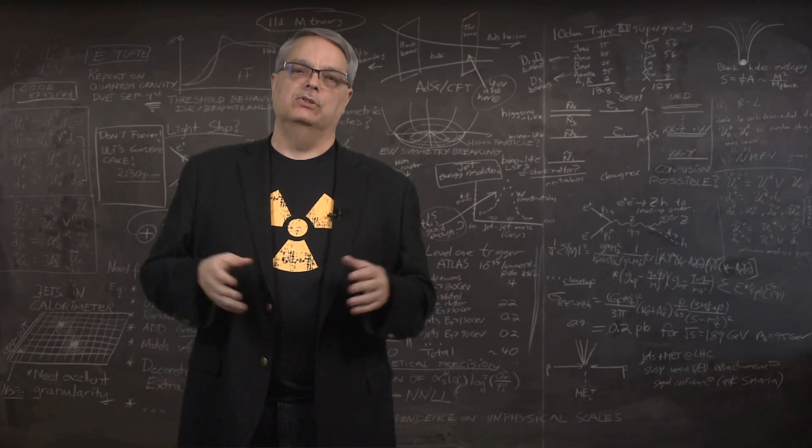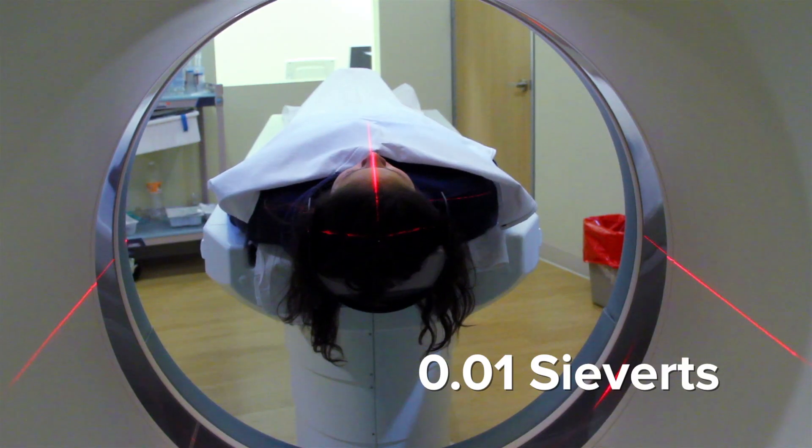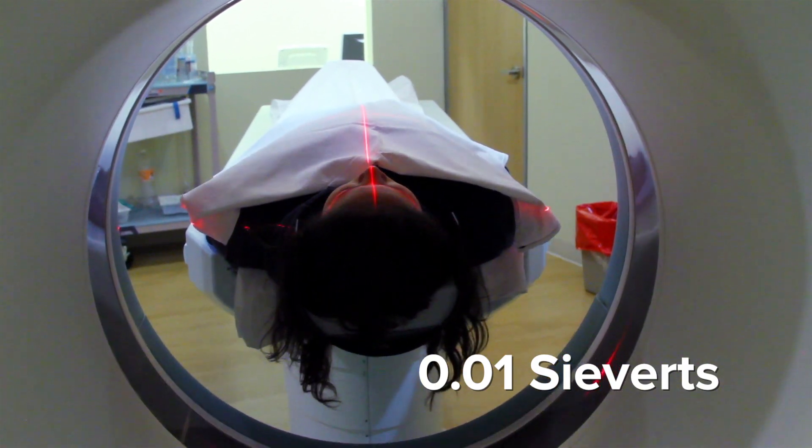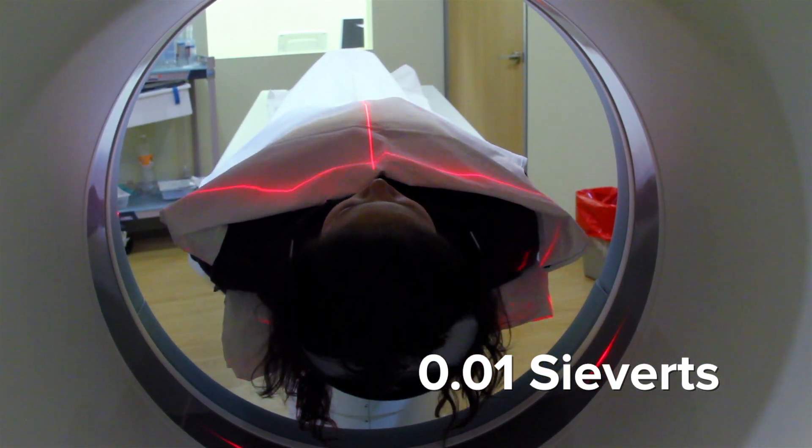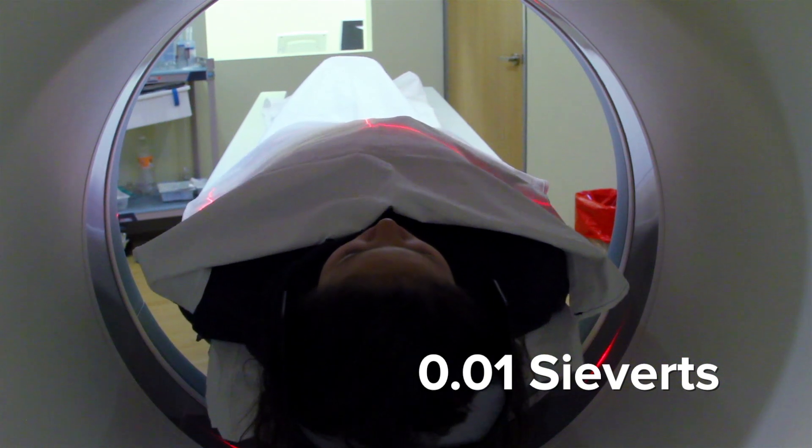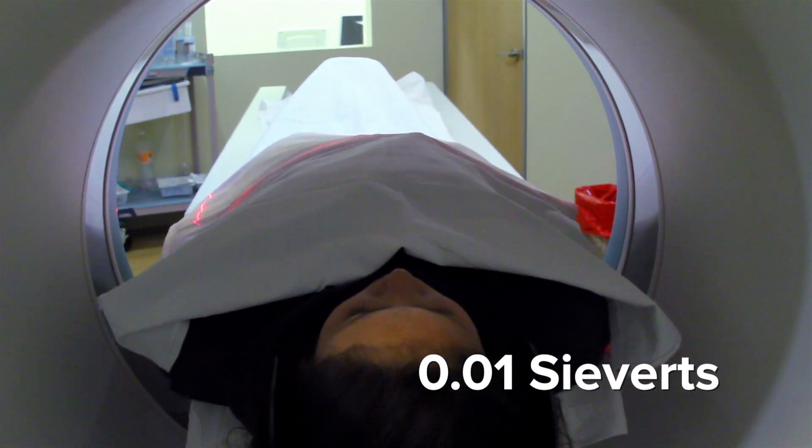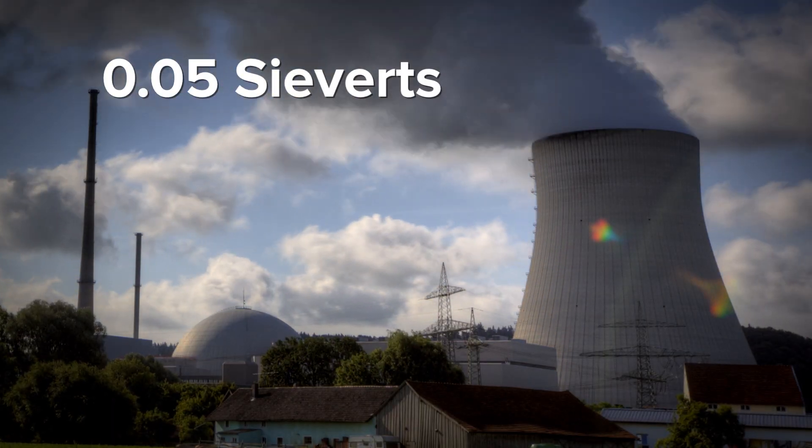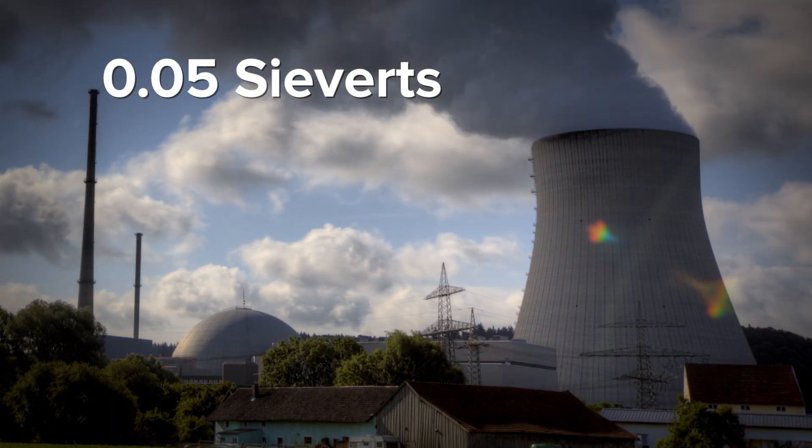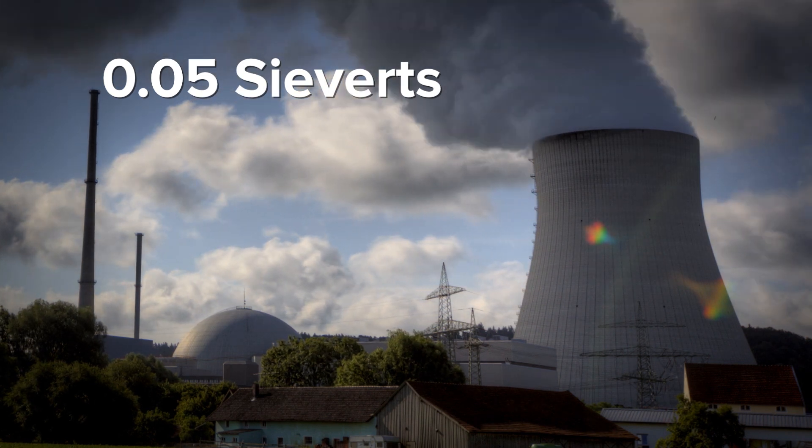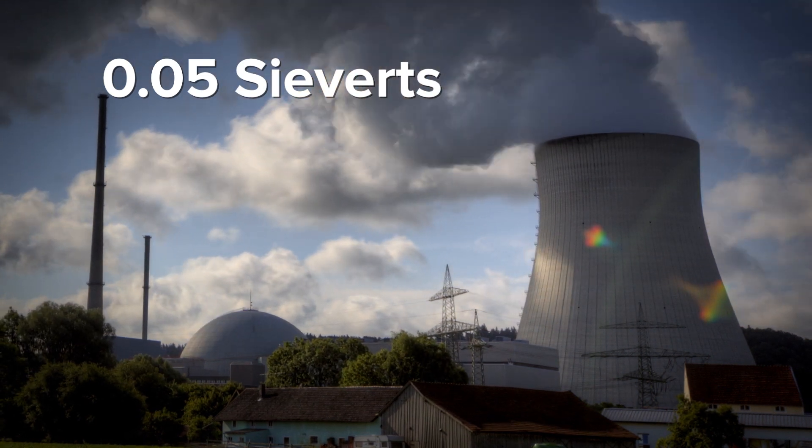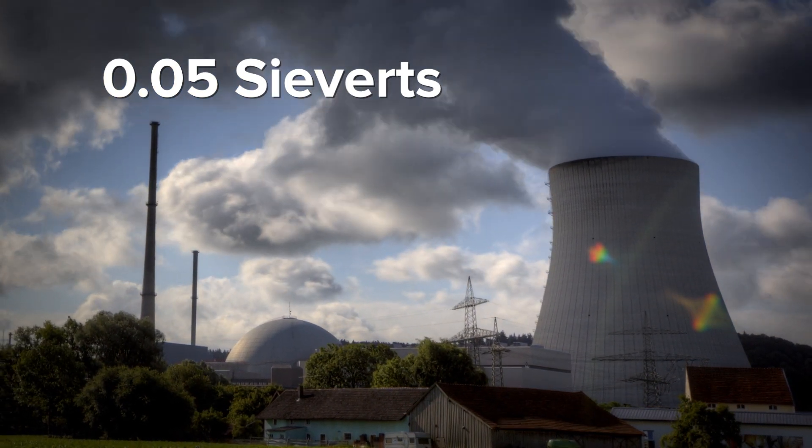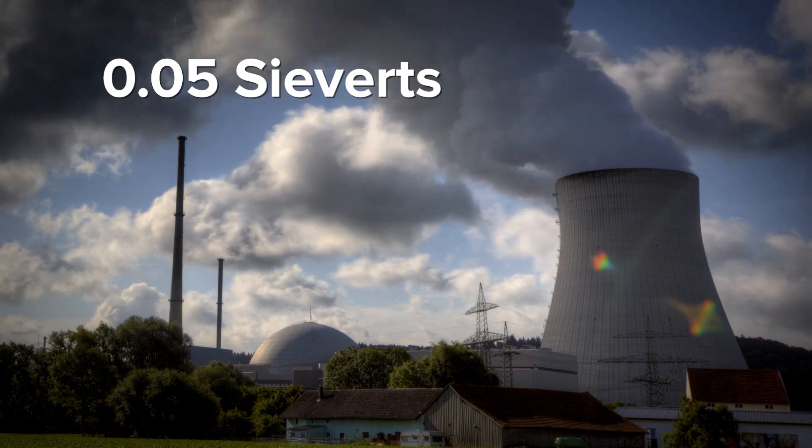So what about some bigger doses? If you're unlucky enough to need a whole body CT scan, you're looking at 0.01 sieverts of radiation. By the way, a whole body CT scan is something doctors might do if they need to look inside your entire body. What about people working in nuclear facilities? They are limited to receiving a maximum of 0.05 sieverts of radiation over the course of the year, or about 8 times as much as they get just living their daily lives. Most of course receive much, much less.